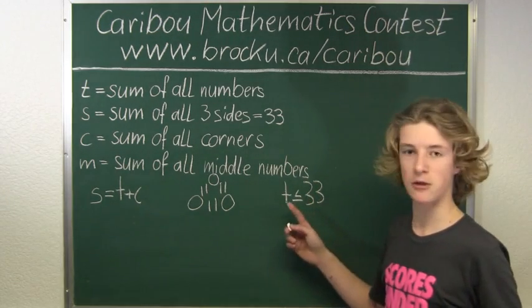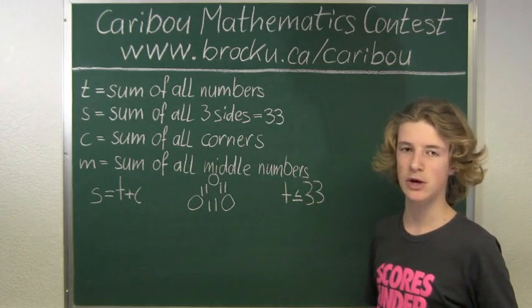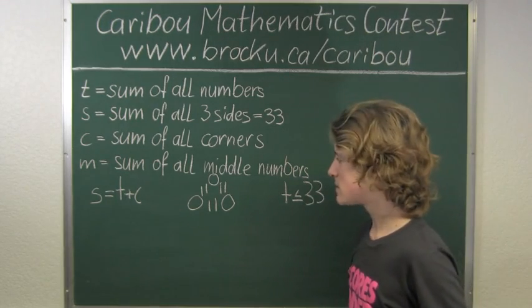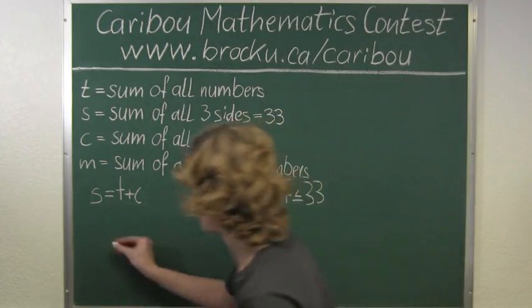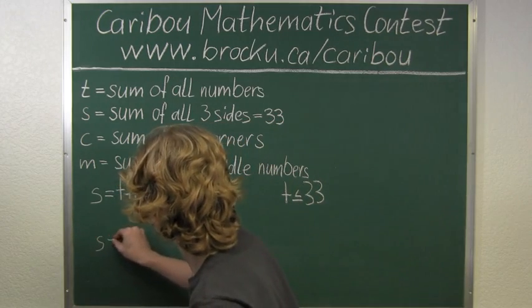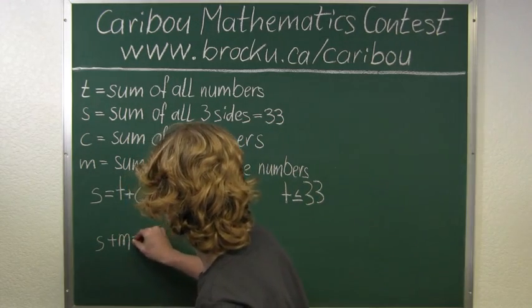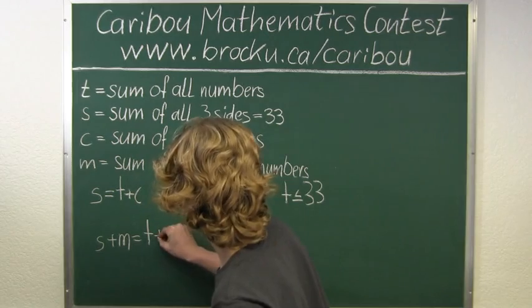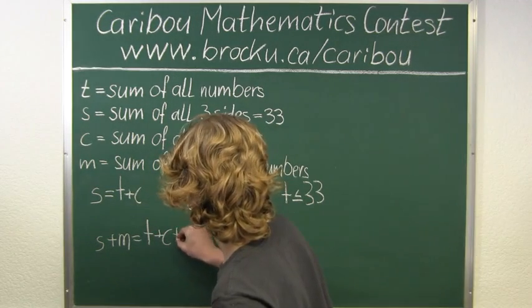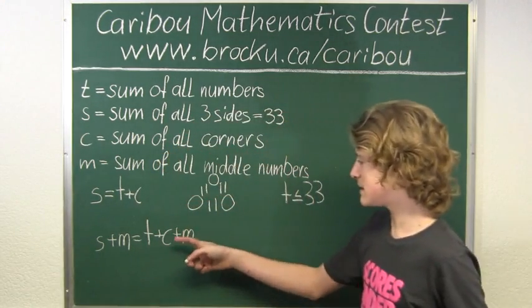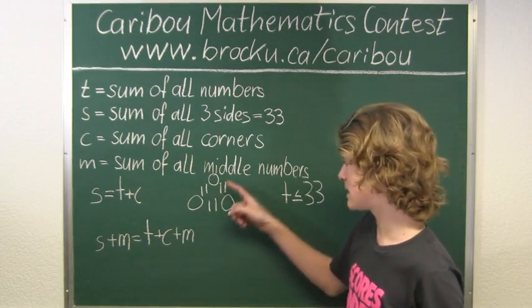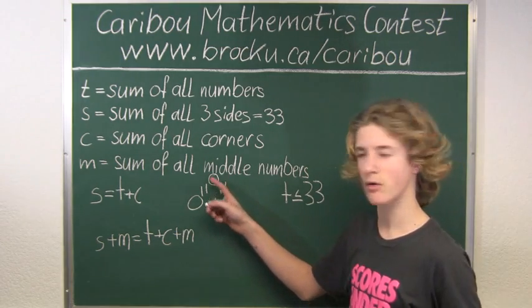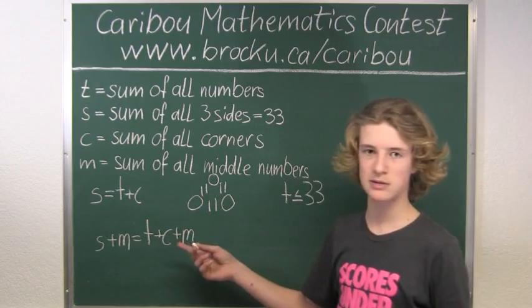So now that we have the largest value of t, we will try to find the smallest value of t now. So now let us add m to each side. So here we will have s plus m, and then we will have t plus c plus m. So we know that c plus m is t, because all the corner values, that you would add that up to all the middle values, and then you have all the numbers added together once. So that would equal 2t.